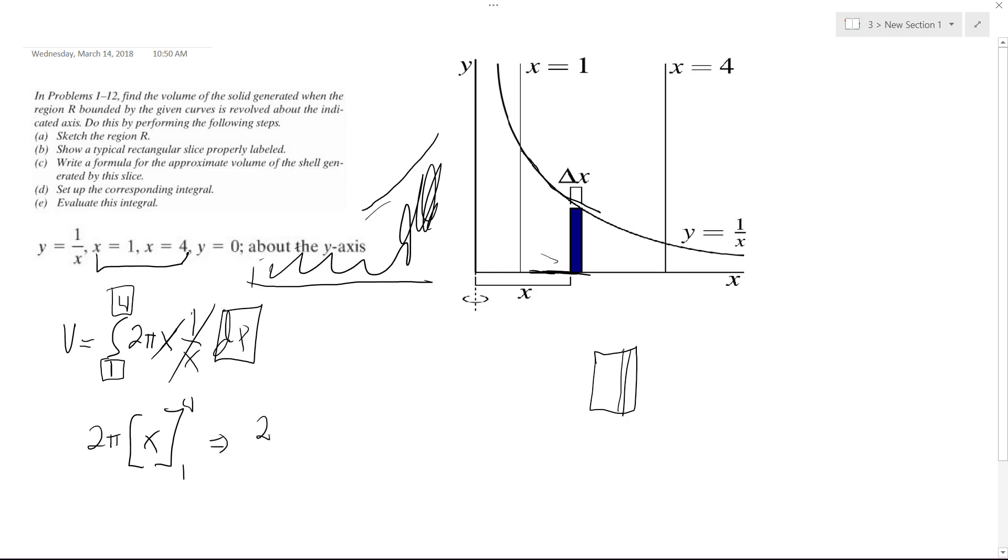So we end up with 2 pi times 4 minus 1. We end up with 3. So we end up with 3 times 2 pi, which is 6 pi.